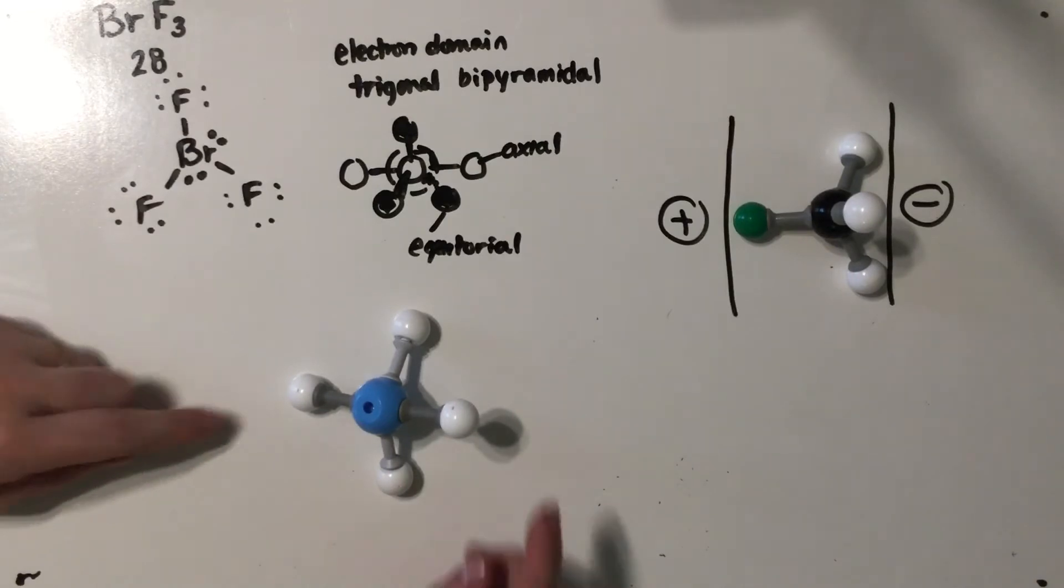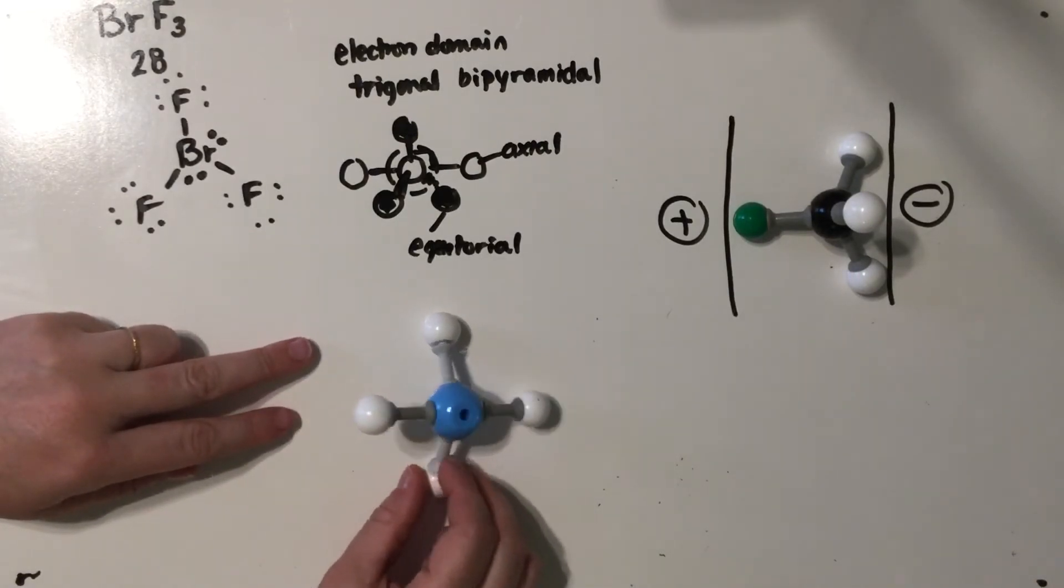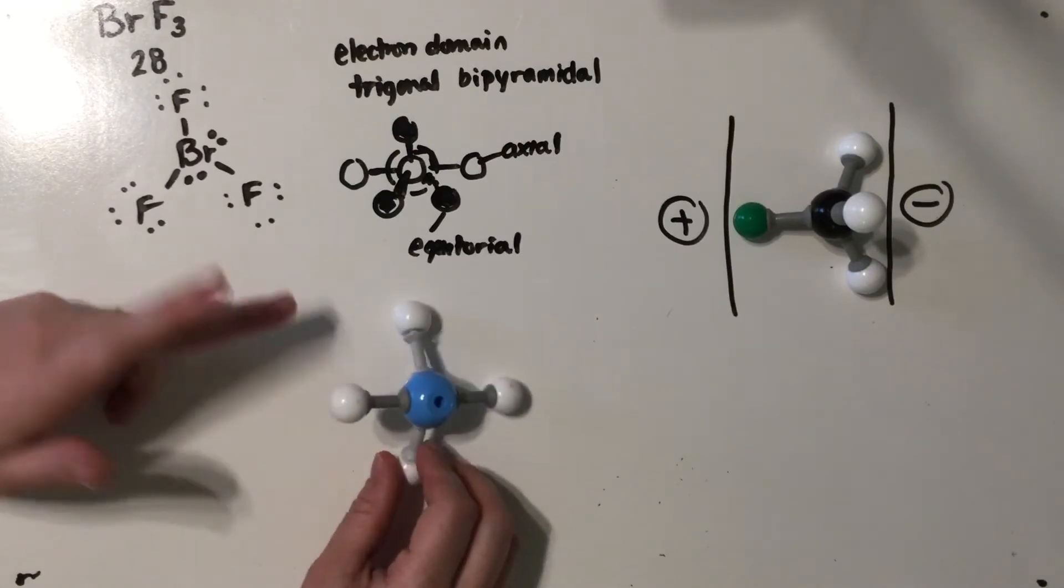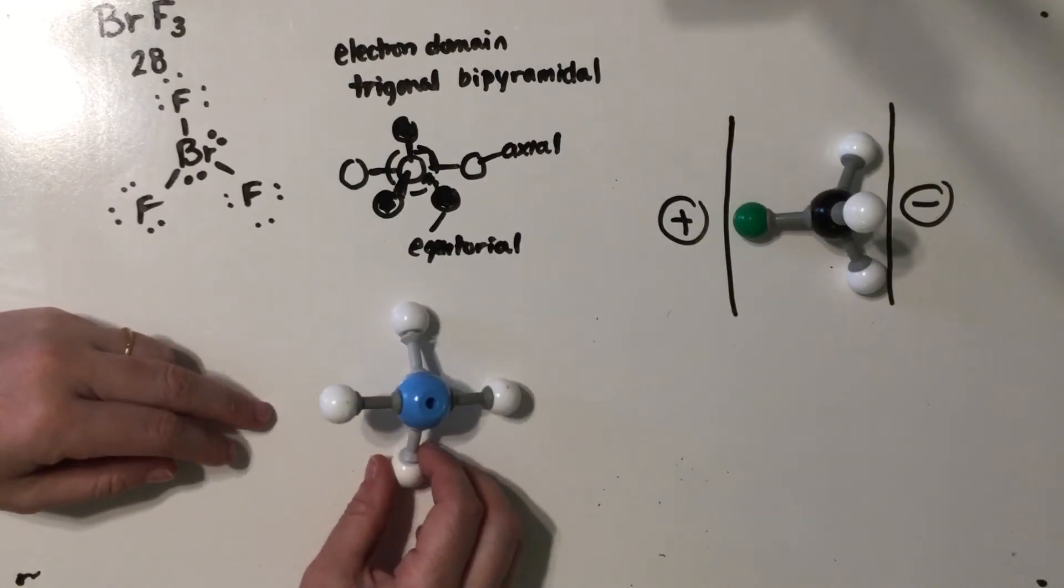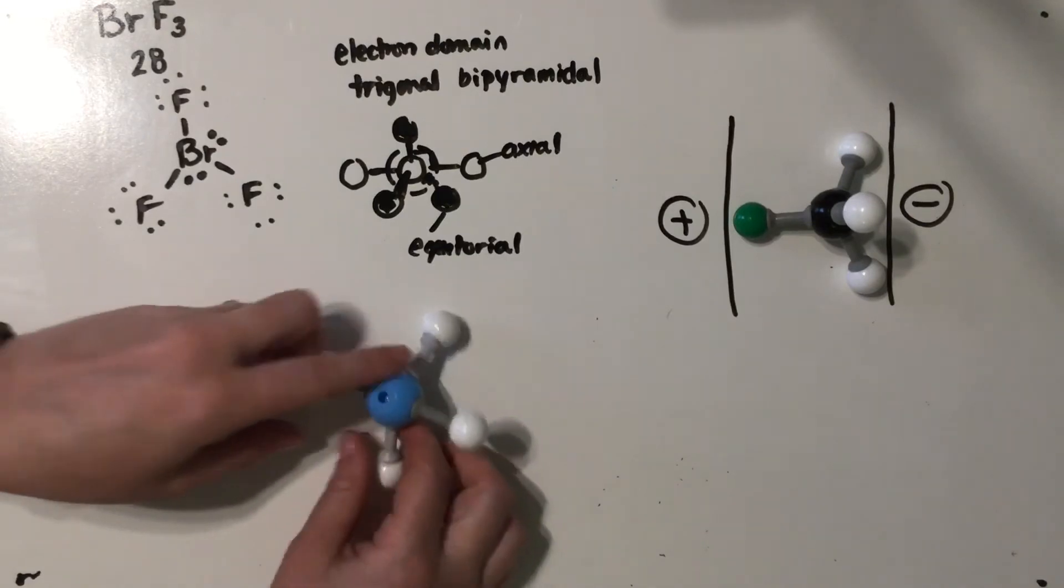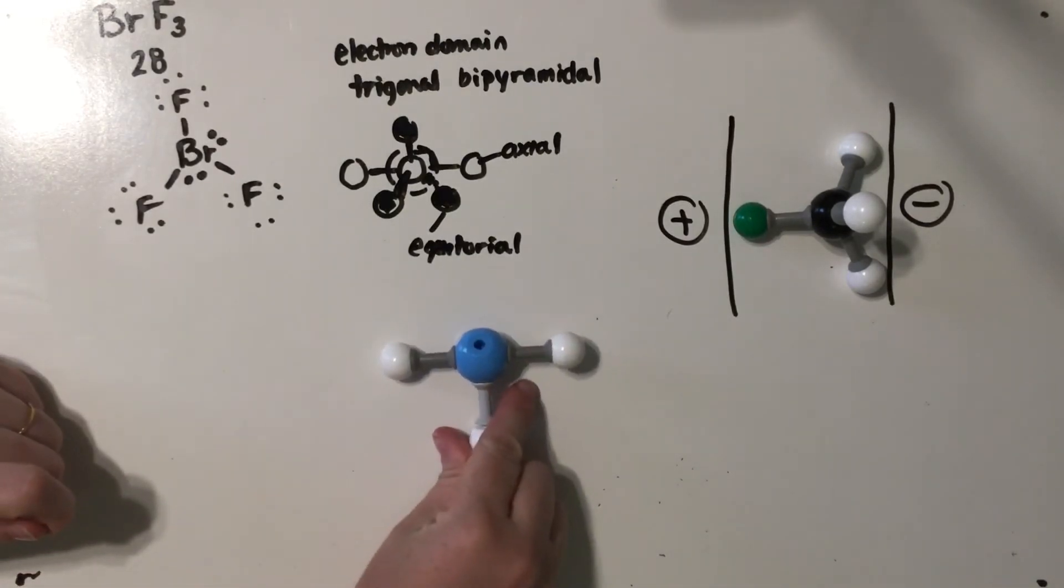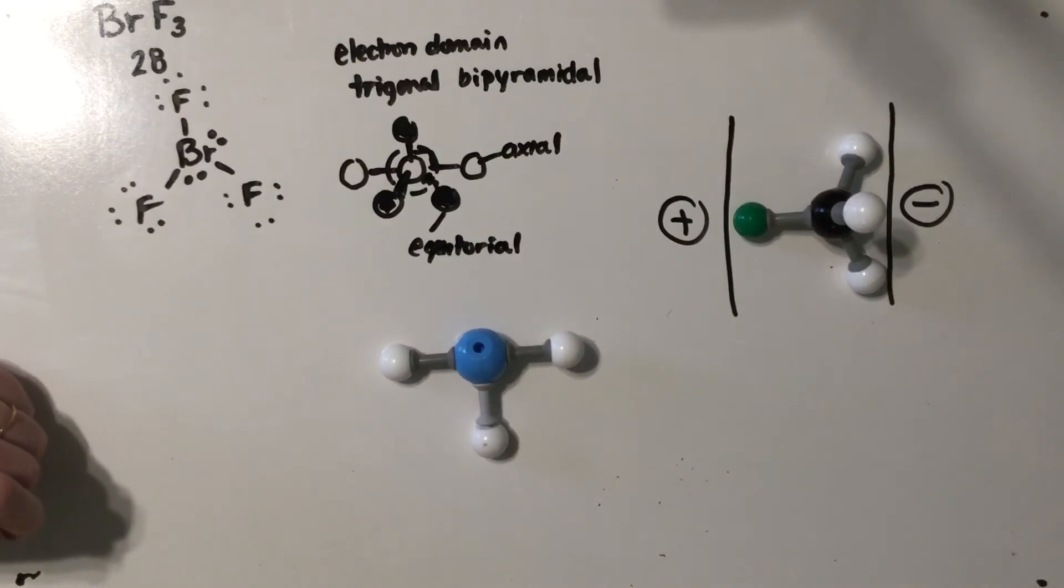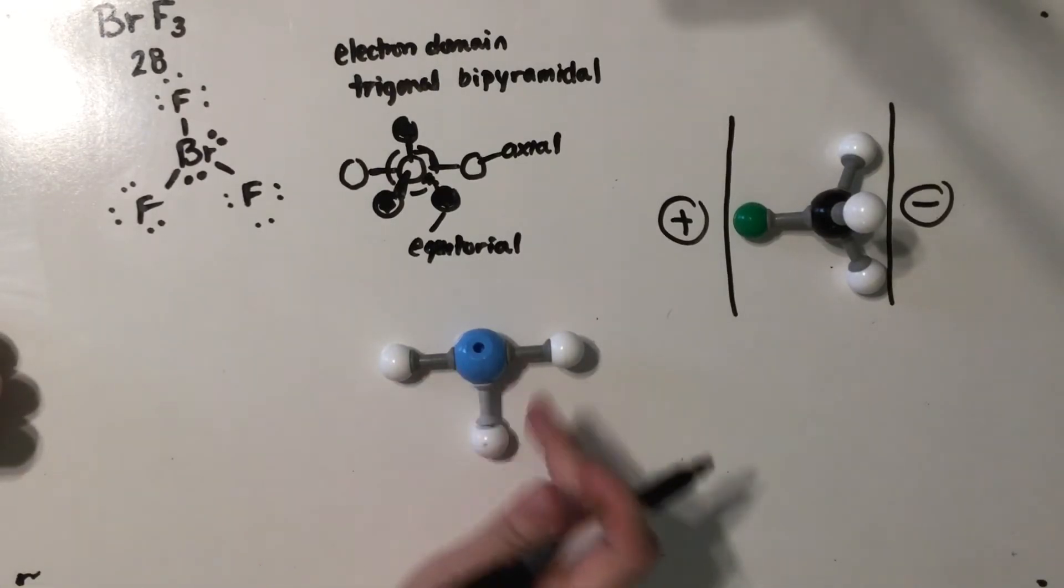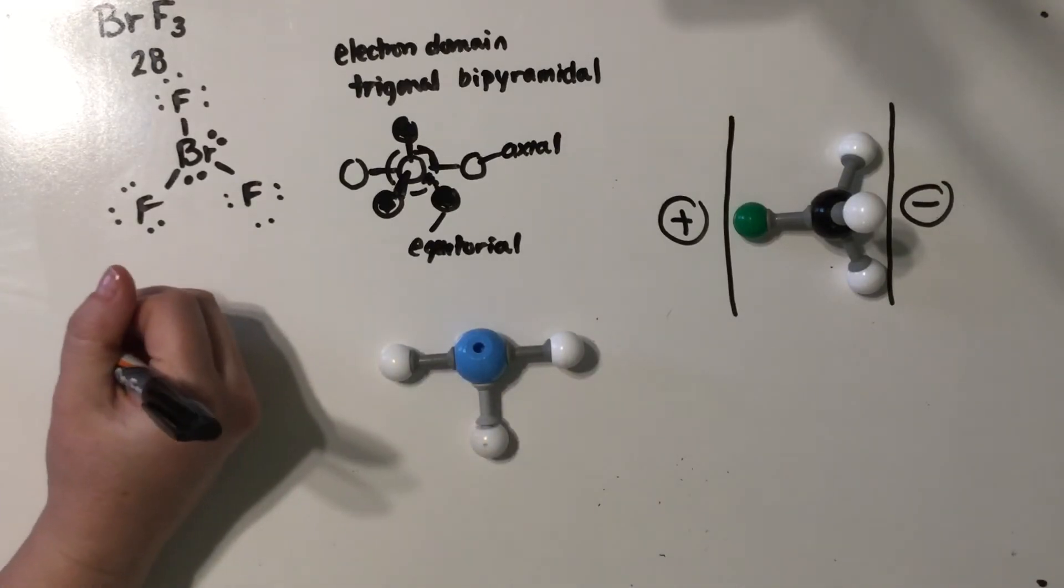So if you remember back, if you place one, you wind up with a seesaw shape. Seesaw. It's also called a distorted tetrahedron, but that's just crazy. And when you take away the second one, like we have here, that is our T shape. And that is the best isomer. It's the one that's the most stable. So we have our T shape.